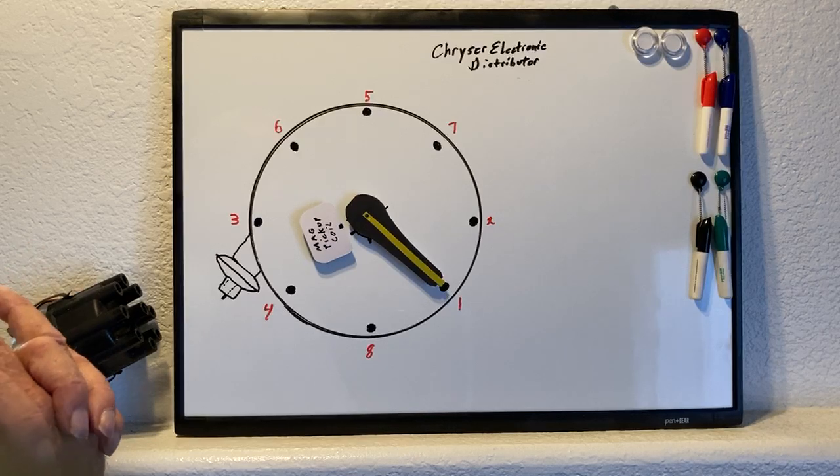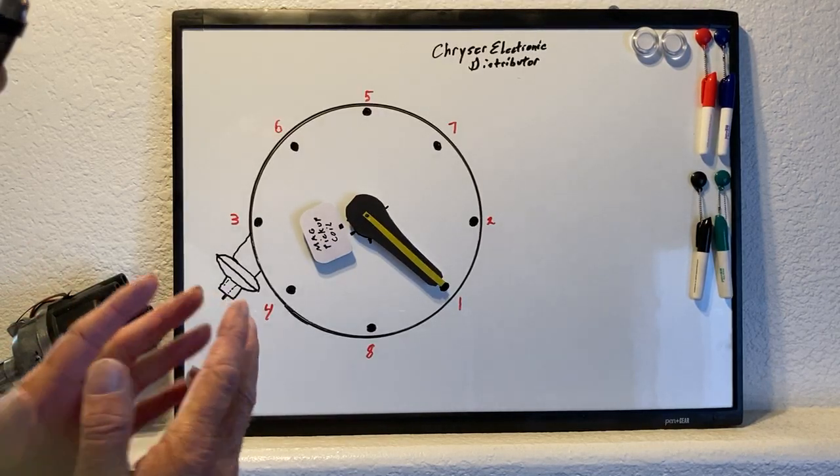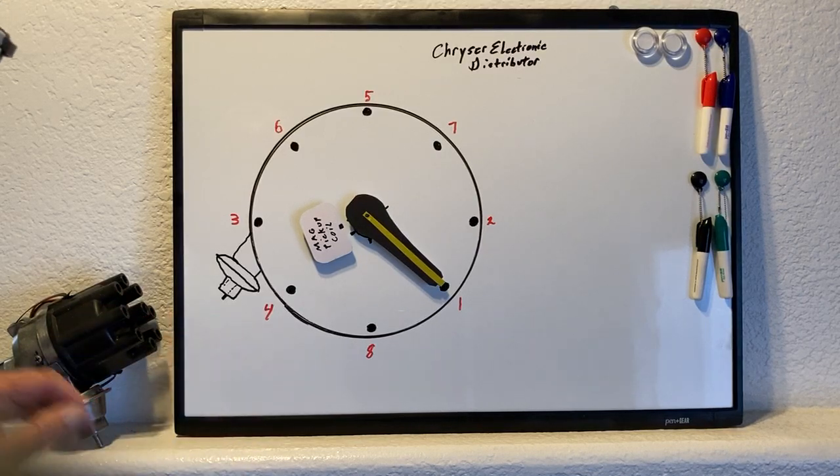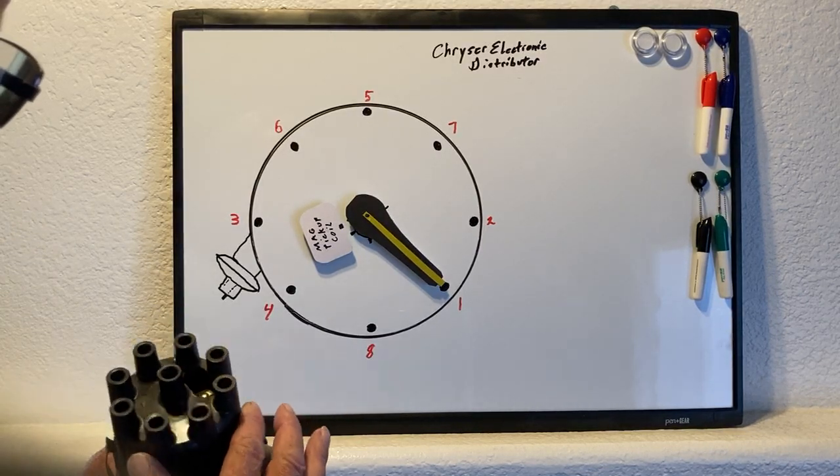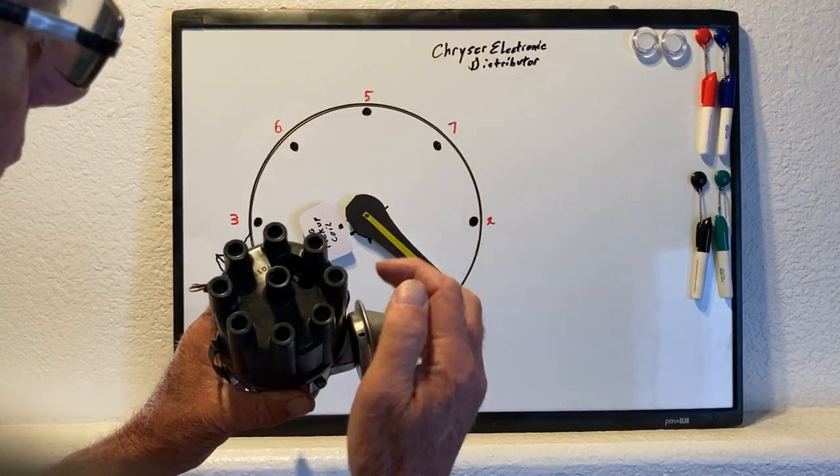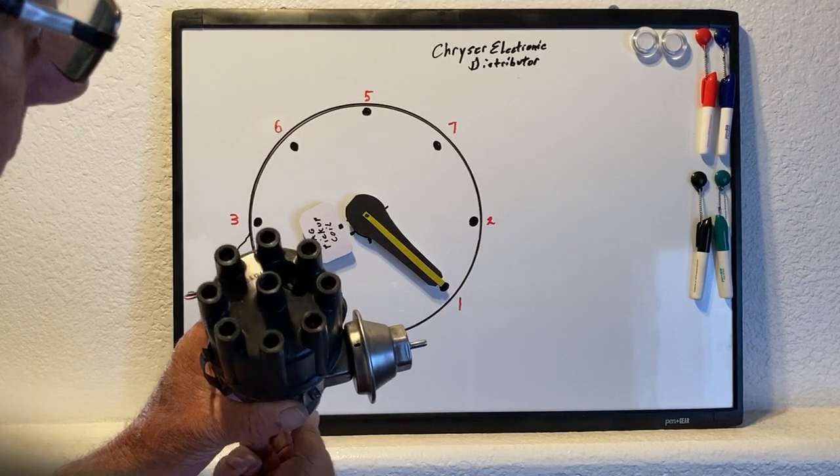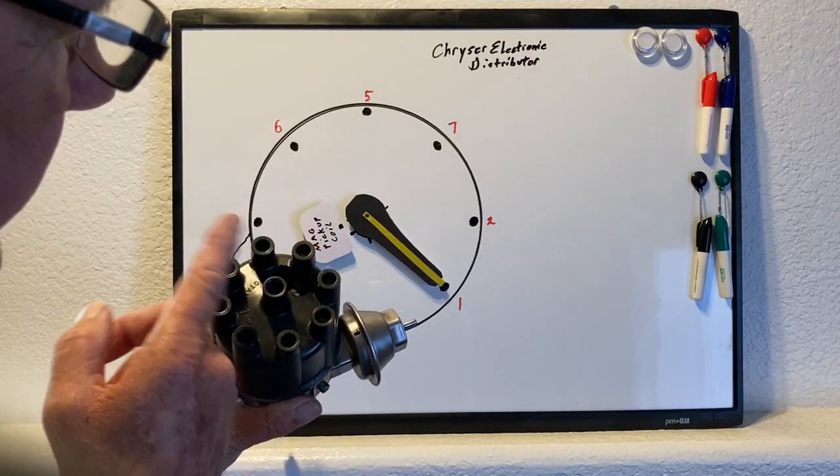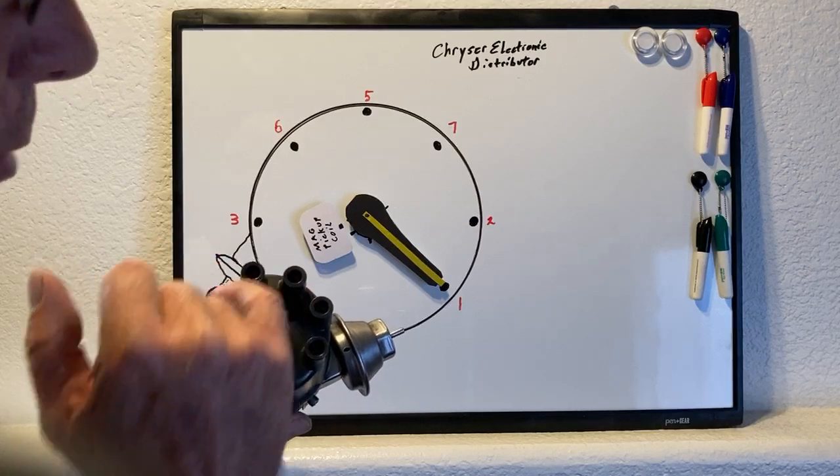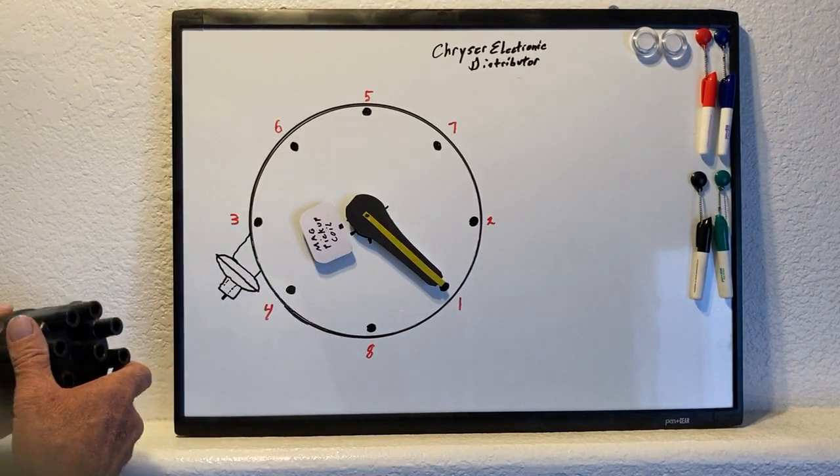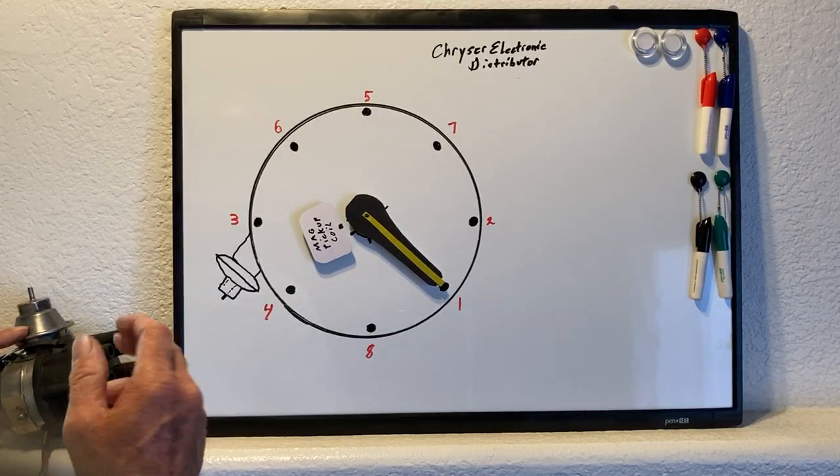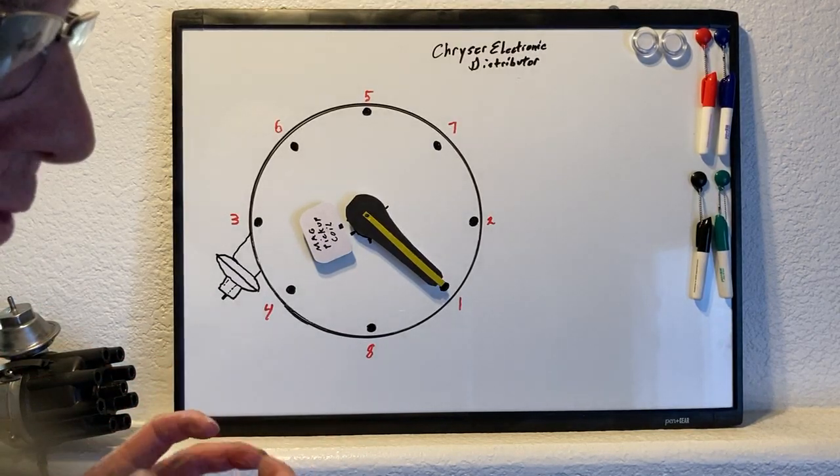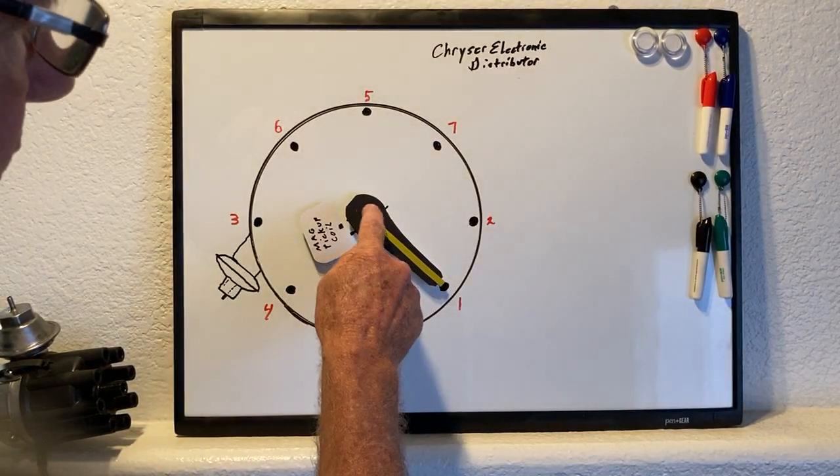So that's the basics on rotor phasing and why it needs to be looked at on some distributors. Most distributors are so close you might as well not even bother with it, but if you wanted to do it for the fun of it, just take an old cap like this, cut a big hole in it so you can see the rotor, put a timing light on that wire terminal, and you'll see where that spark is firing and how it's lined up with that terminal inside the cap. It's pretty easy to do. Aftermarket distributors have that built into them to change the rotor phasing, and some companies make a rotor that's actually changeable so you can change where the arm is compared to the drive cap.